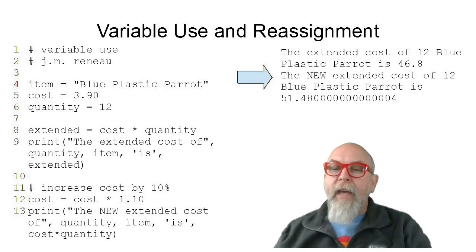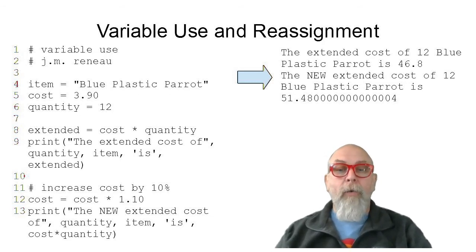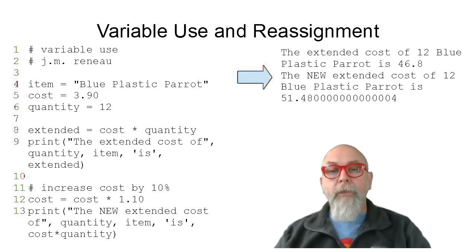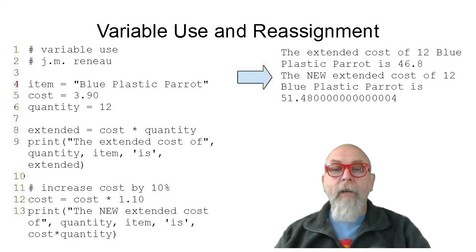This example takes the three variables that we assigned in the earlier example of the item cost and quantity. On line eight, notice that it creates another variable called extended, but extended contains the cost times the quantity. So the variable extended would contain 3.98 times 12 because cost was assigned to that and quantity was assigned to that in a previous statement.